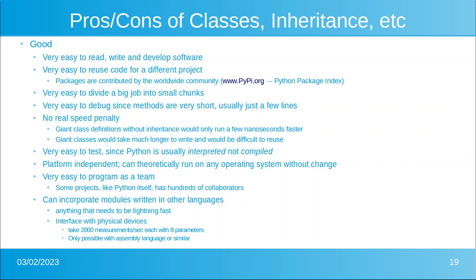Theoretically, you could write a program that is just one big, long, giant text, but it would only be a few nanoseconds faster than something done with classes and organized. That's essentially why all of these languages are going to object-oriented programming. If you wrote your program in one giant stream, it would be incredibly difficult to debug and incredibly difficult to reuse any part of it. Python is very easy to test because it's interpreted and not compiled. It's platform independent — you can run it on Windows, Linux, Apple, Android, and on platforms that don't even exist yet. It's very easy to program as a team, and you can incorporate modules written in other languages.